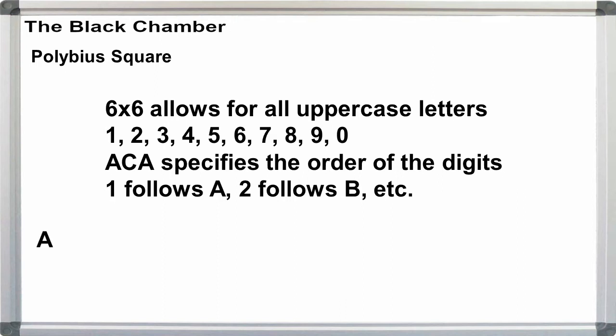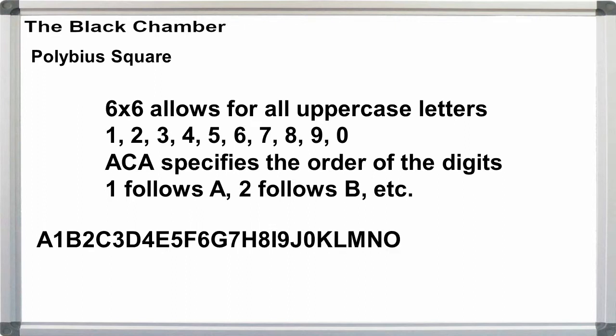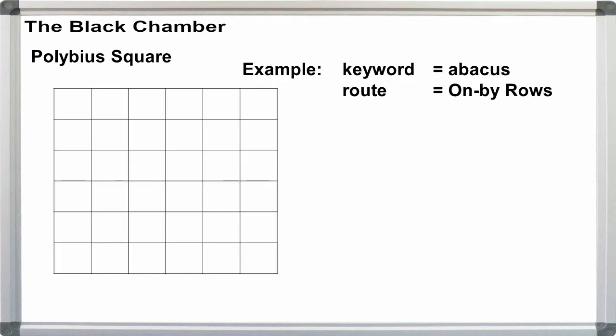For a plain alphabet, we have A1, B2, C3, D4, E5, F6, G7, H8, I9, J0, and then K-Z. Using the keyword abacus and an on by rows route, we get the 6x6 square A1, B2, C3, U, S, D4, E5, F6, and then so on.